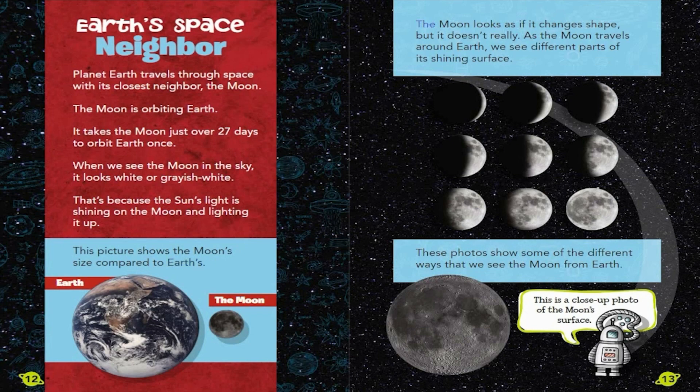The Moon looks as if it changes shape, but it doesn't really. As the Moon travels around Earth, we see different parts of its shining surface. These photos show some of the different ways that we see the Moon from Earth. This is a close-up photo of the Moon's surface.